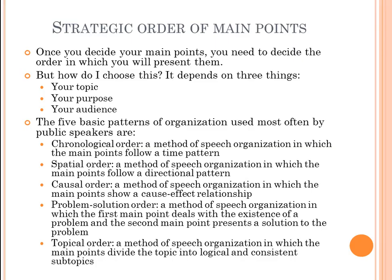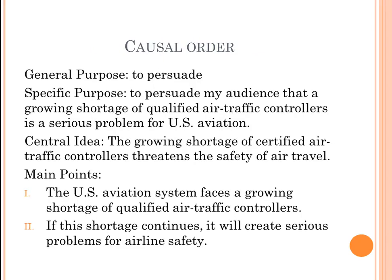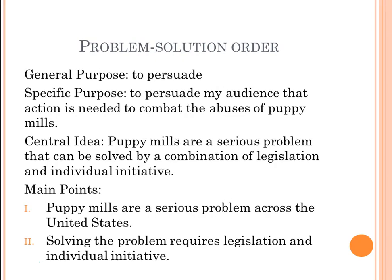Problem-solution order means the first main point presents the problem and the second presents the solution. Example: general purpose, to persuade; specific purpose, to persuade the audience that action is needed to combat the abuses of puppy mills; central idea, puppy mills are a serious problem that can be solved by a combination of legislation and individual initiative. Main point one: puppy mills are a serious problem across the United States — problem. Main point two: solving the problem requires legislation and individual initiative — solution.